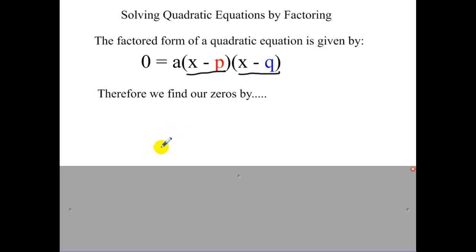Therefore we find our zeros by our zero product property. We set x minus p equal to zero, and we set x minus q equal to zero. And then we'd solve each one of those equations.